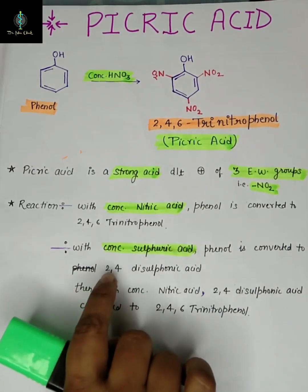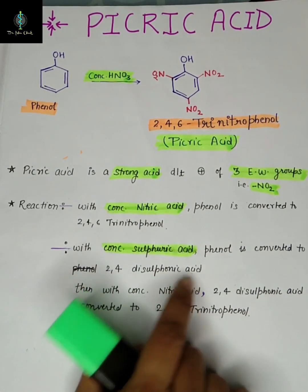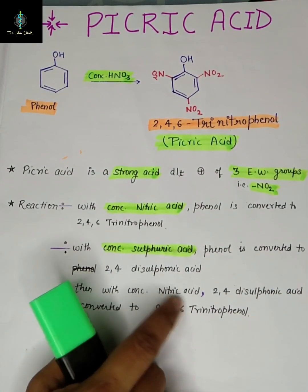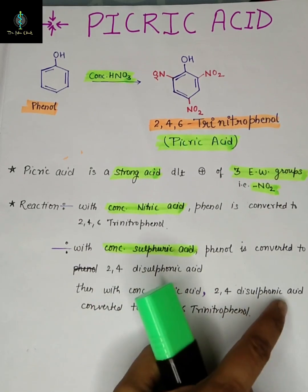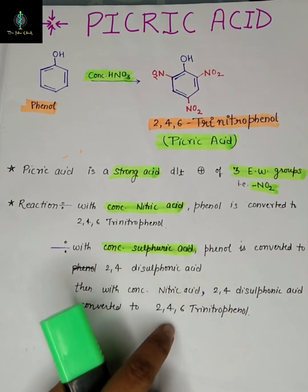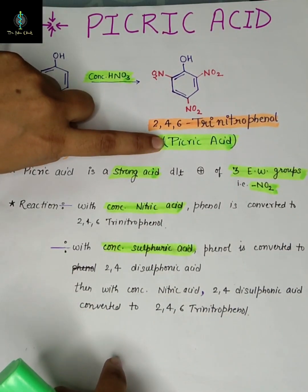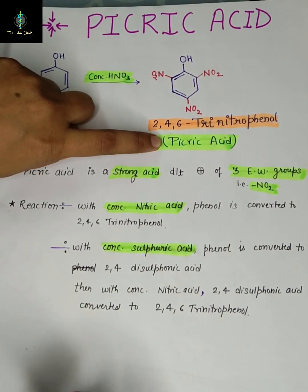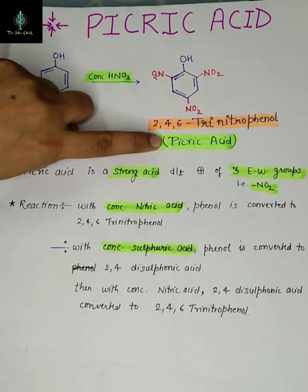Then with concentrated nitric acid, 2,4-disulfonic acid is converted to 2,4,6-trinitrophenol, that is your picric acid. It is formed in a very small amount; its yield is poor.